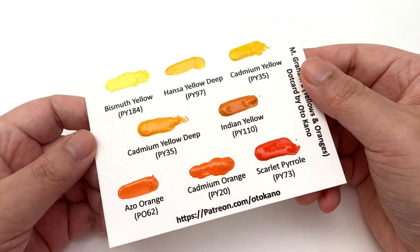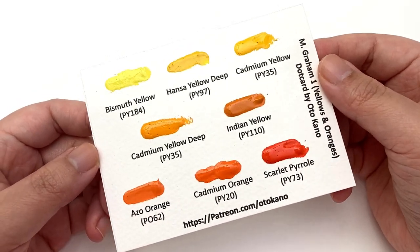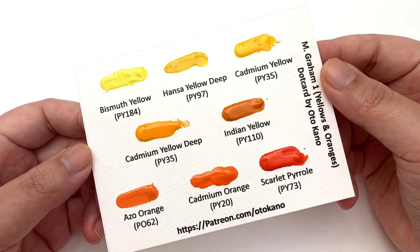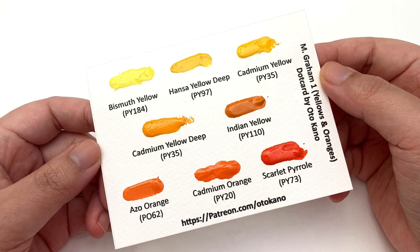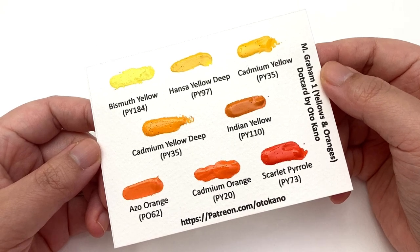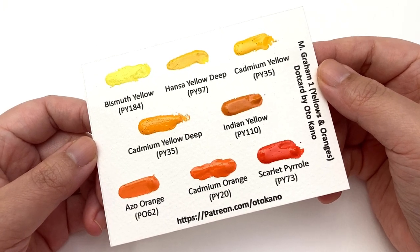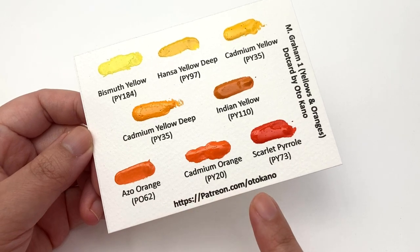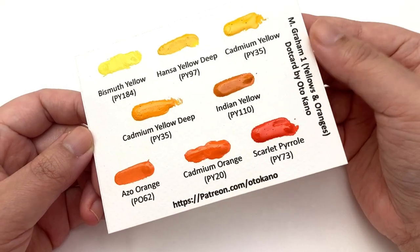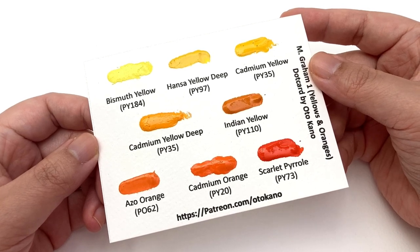If you want to try these colors but you don't want to commit to buying full tubes yet then this month's dot card might be right up your street. It is the companion card to this series and in this month we are going to be having eight yellows and oranges colors that I think are the best from M. Graham. If you'd like to receive this then all you have to do is head on over to patreon.com forward slash autocarno and sign up to the appropriate tiers and I will be posting this to you as soon as I can.